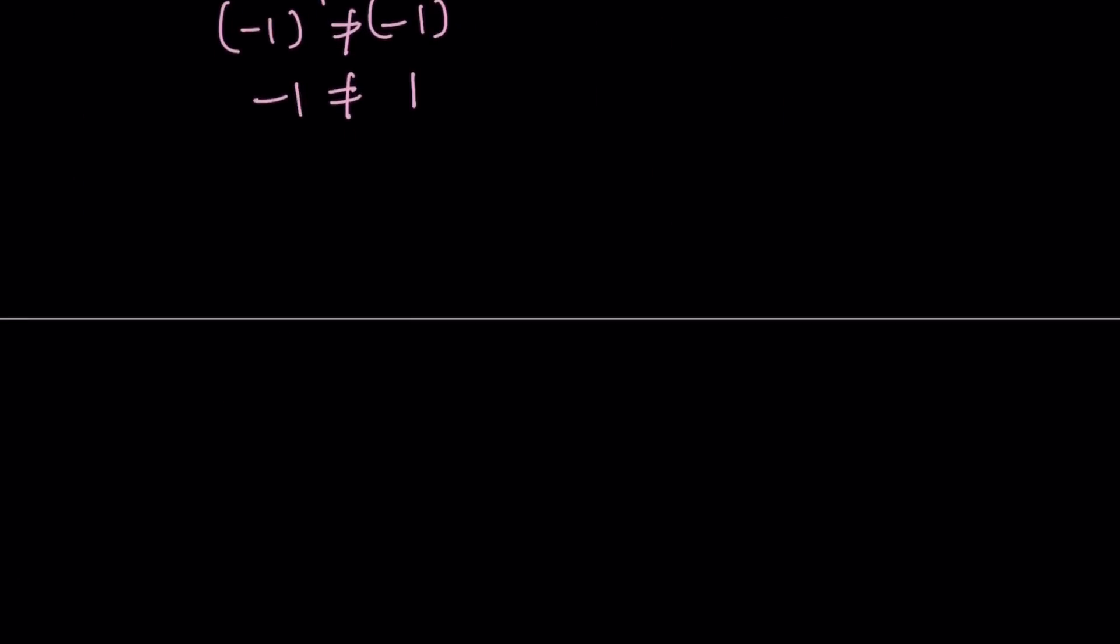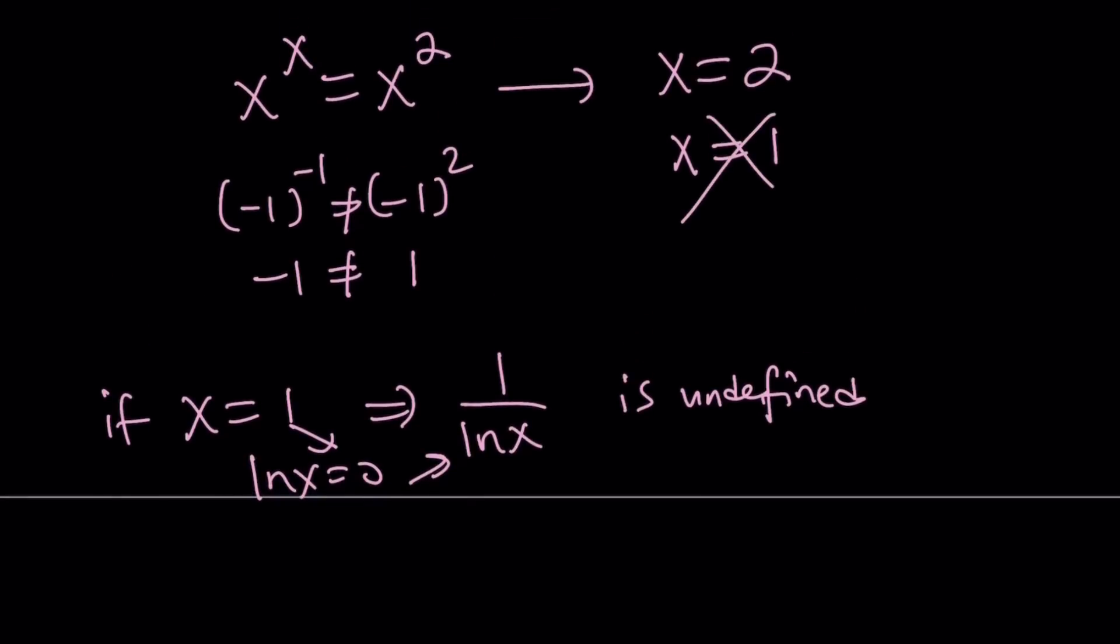Now, if x is equal to 1, then 1 over ln x becomes undefined because ln x becomes 0, right? And this becomes undefined. Therefore, we can't take x equals 1, which means we only have one solution, x equals 2 from here.